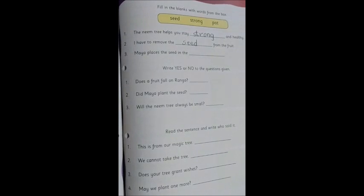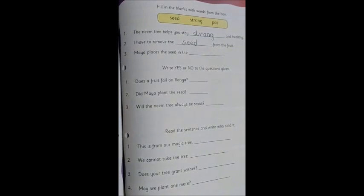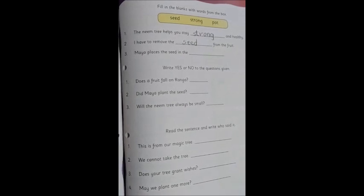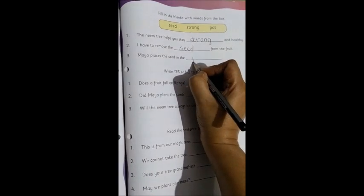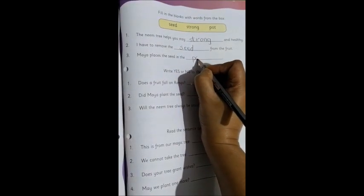Now the last one. Maya places the seed in the. So to grow, for the plant to grow, where should she place the seed? In the pot. So the next one is pot. So we will write the word pot. P-O-T. Pot.